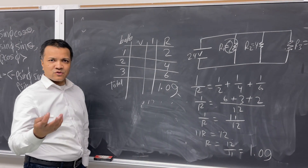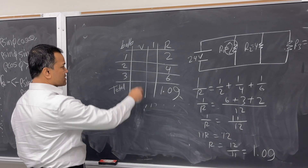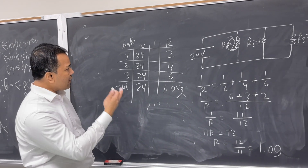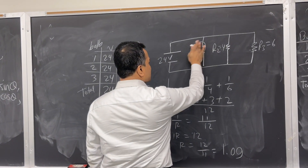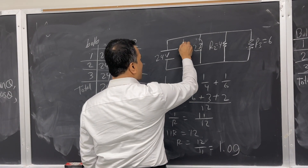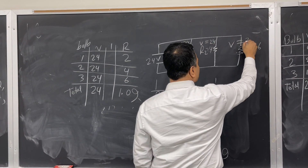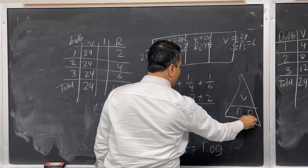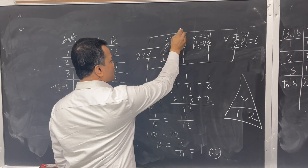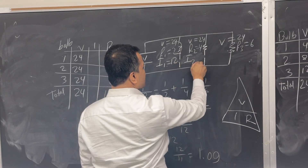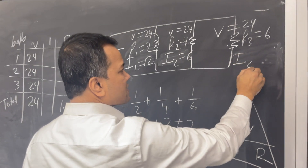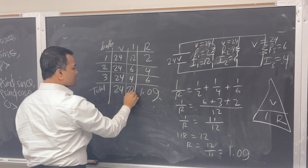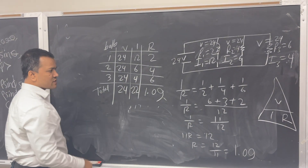Before calculating current, the easiest thing in a parallel circuit is the voltage — it's the same across all branches: 24 volts each. Now using I equals V over R: I1 equals 24 divided by 2 equals 12 amps; I2 equals 24 divided by 4 equals 6 amps; I3 equals 24 divided by 6 equals 4 amps. The total current is 12 plus 6 plus 4 equals 22 amps.